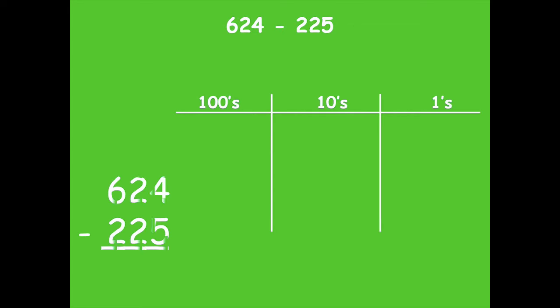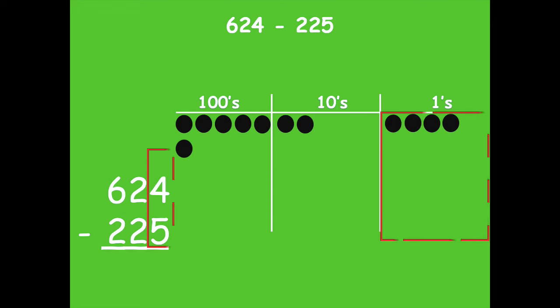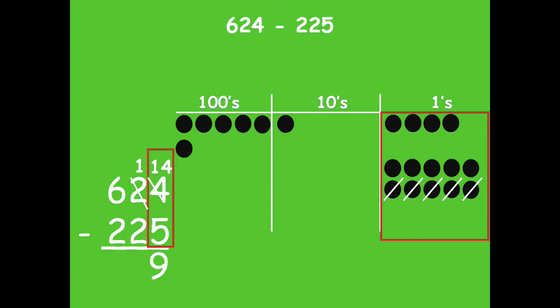Pause if you need more time. Otherwise, here we go. We're going to start by modeling 624. We're going to start in our ones place. Oh silly Mrs. Walker. We're going to start in our ones place. We don't have enough ones to be able to subtract. So I'm going to decompose a ten into ten ones. Let's model what we just did on our vertical form. So now I have one ten and fourteen ones. Now I can subtract five. And I'm left with nine ones.